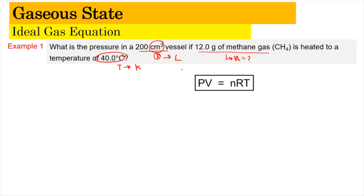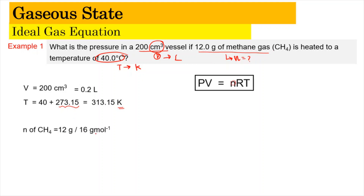Since this question uses the ideal gas equation, we use PV = nRT. From the information given, our volume is 200 cm³, which equals 0.2 litres. Our temperature is 40 degrees Celsius, and we add 273.15 to get 313.15 Kelvin. For the number of moles, we use n = mass / molar mass. The mass is 12 g and the molar mass of methane is 12 + (4 × 1) = 16 g/mol. So n = 12/16 = 0.75 mol. We have all the information needed to find the pressure.